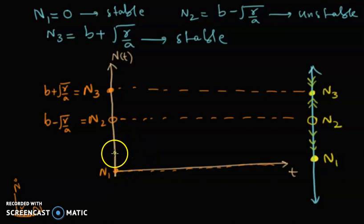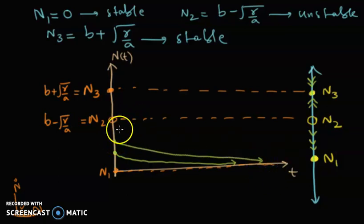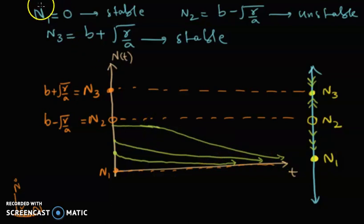If some initial data is taken in this region, the trajectory will move towards n1. In other words, the population will go extinct or reach zero in the long term. If a trajectory is taken above n1 but below n2, it will again move towards n1 since n1 is the attractor. If something is taken close to n2 from below, it will be repelled by n2 and as time goes to infinity the trajectory will move towards zero.